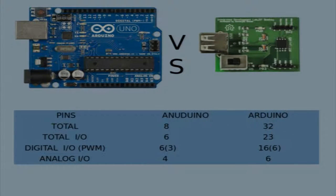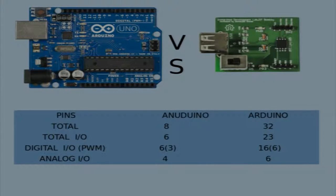Anudino has 8 pins, of which 6 are I/O pins and 2 are VCC and ground. Arduino, on the other hand, has 32 pins, of which 23 I/O pins are available. From this difference it is clear that it is quite easy to interface devices with Arduino — it has lots of pins and lots of memory — but we have successfully interfaced a large number of devices with the Anudino.